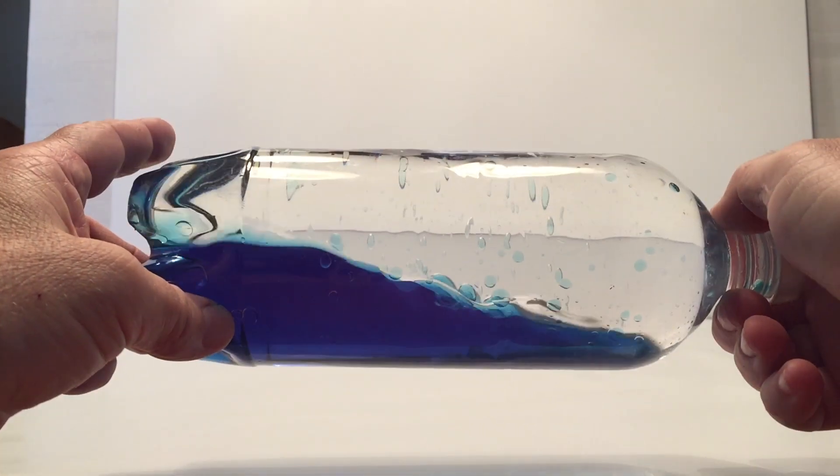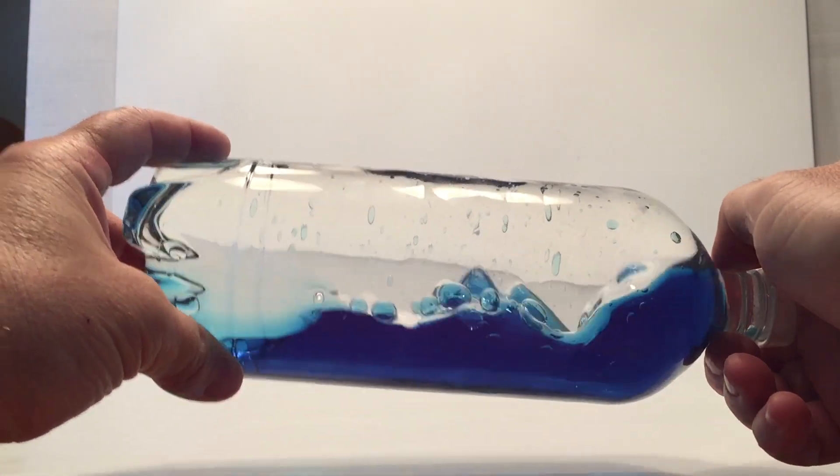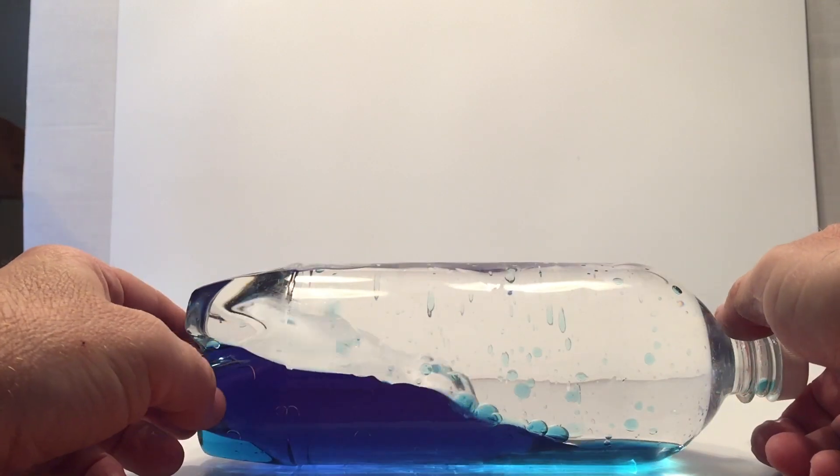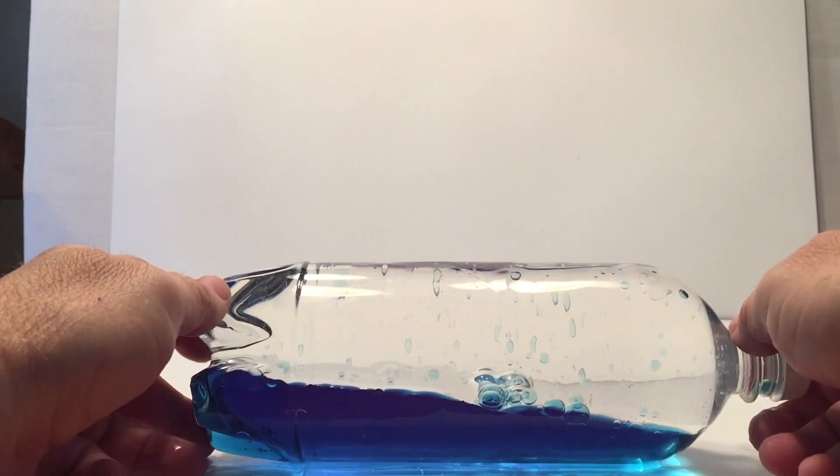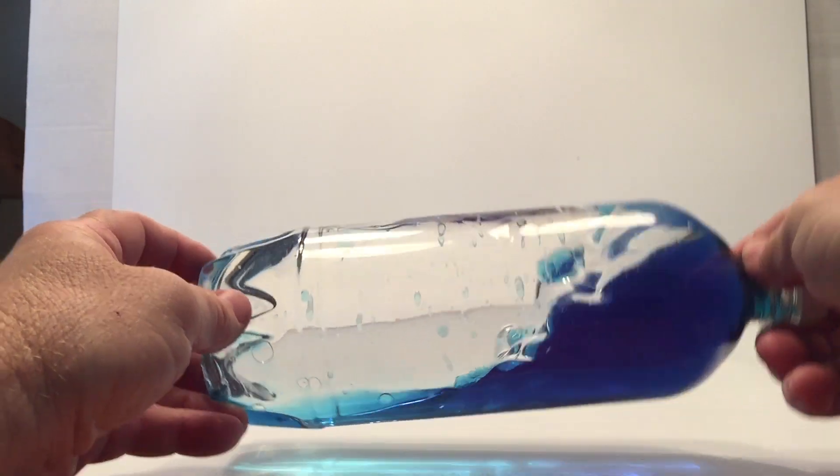The longer waves travel faster than the shorter ones and go further before the friction makes them disappear. Our planet waves also happen when the Earth spins on its axis and the water is pulled by the gravity across the formations of the ocean floor.